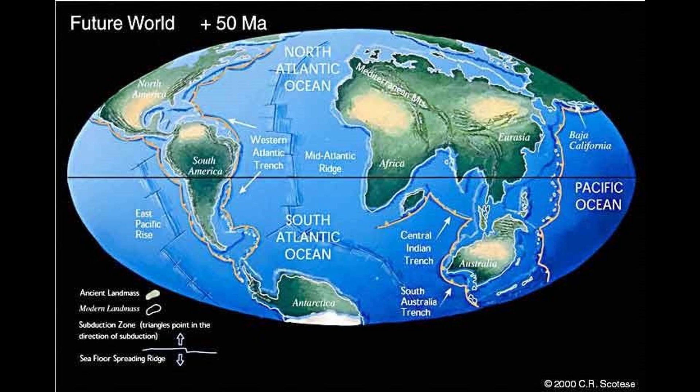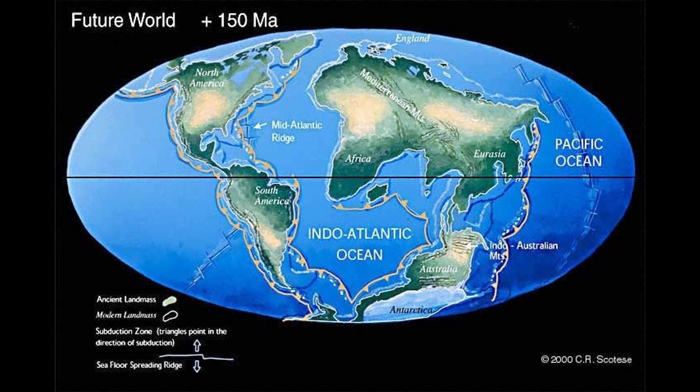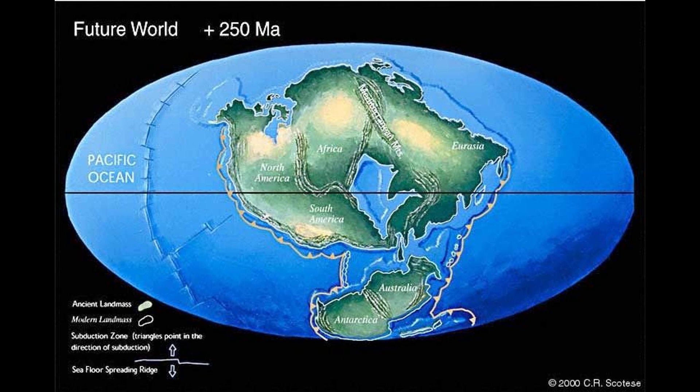Australia will collide with Southeast Asia, and California will slide northward up the coast to Alaska. New subduction zones along the eastern coasts of North America and South America will begin to consume the ocean floor separating North America from Africa. About 100 million years from now, the present-day Mid-Atlantic Ridge will be subducted and the continents will come closer together. The next Pangea — Pangea Ultima — will form as a result of the subduction of the ocean floor of the North and South Atlantic beneath eastern North America and South America. This supercontinent will have a small ocean basin trapped at its center.